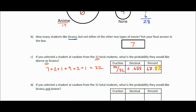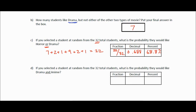That's a pretty good probability because the only people not included are the six who only like anime and the four who didn't respond. If I randomly picked a student from this group, I have a better-than-50% chance of selecting someone who likes one of those two types of movies.